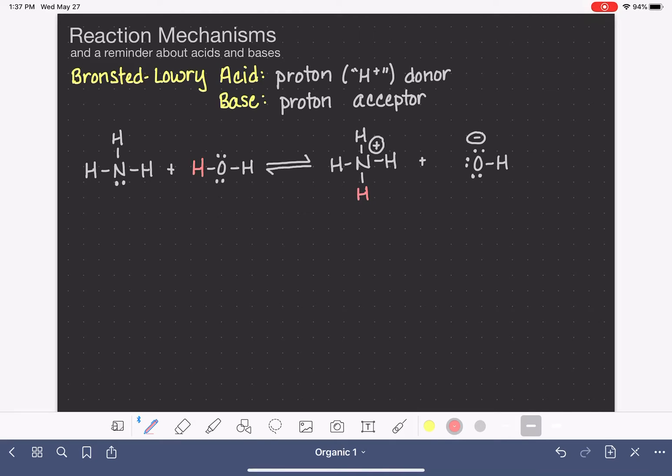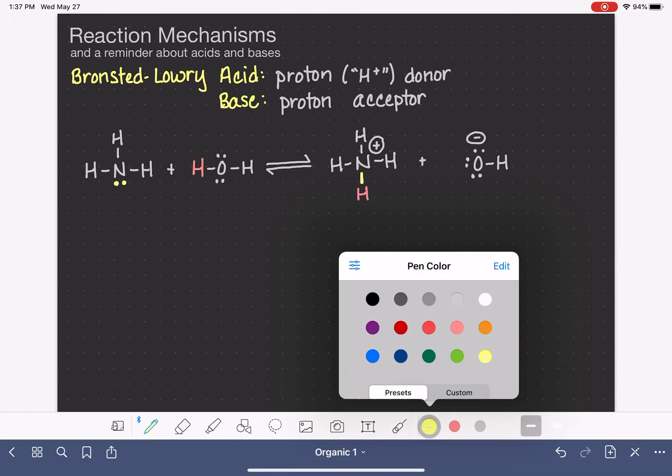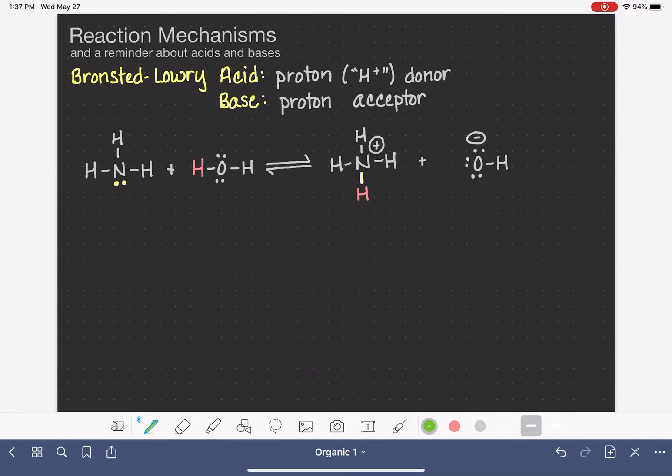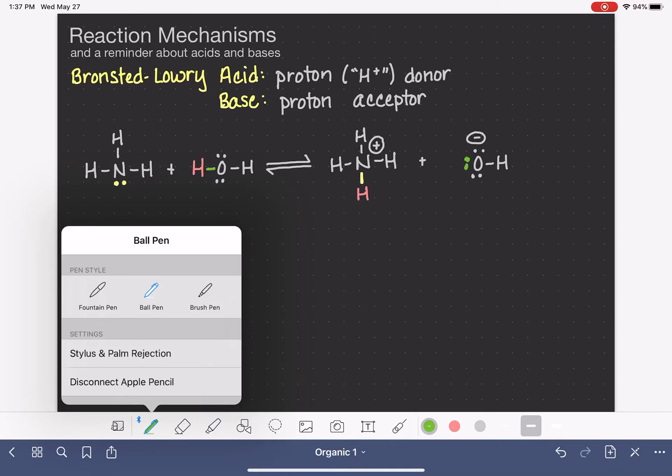Now notice what's not being moved are the electrons. So the lone pair of electrons on the nitrogen, those are the electrons that turn into the nitrogen-hydrogen bond. And let's see if we could do a different color. The oxygen-hydrogen electrons, they turn into a lone pair on the oxygen atom.